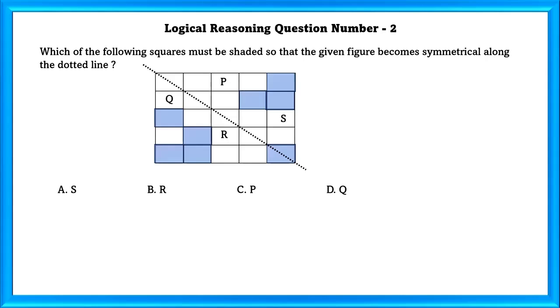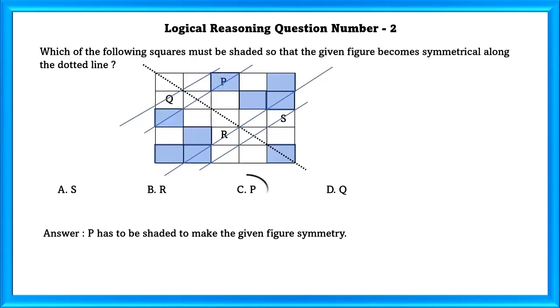Question Number 2. Which of the following squares must be shaded so that the given figure becomes symmetrical along the dotted lines? This part is symmetrical. This part is not symmetrical because P has to be shaded. These two parts are symmetrical. So our answer is P.